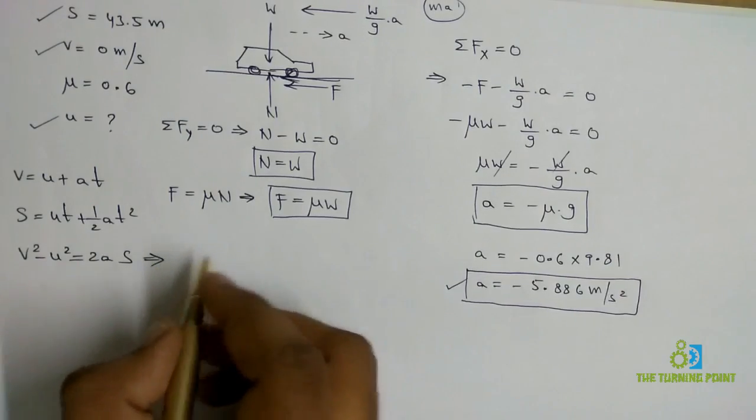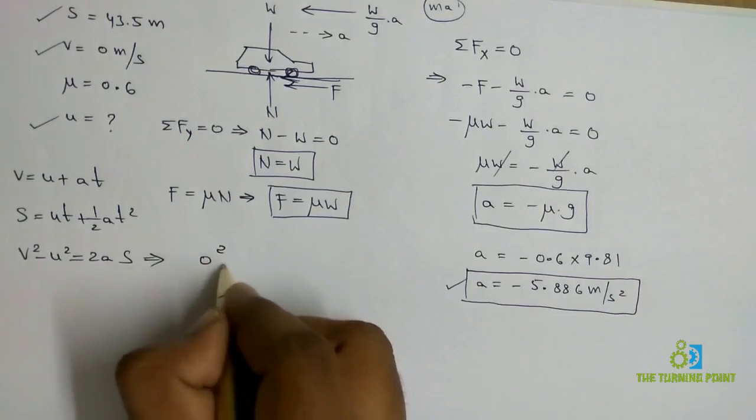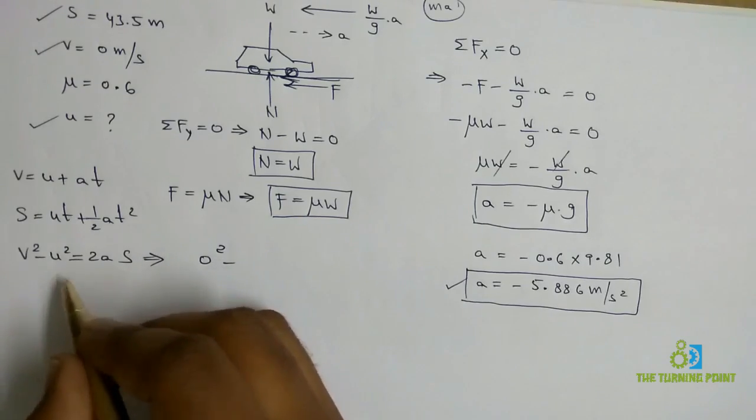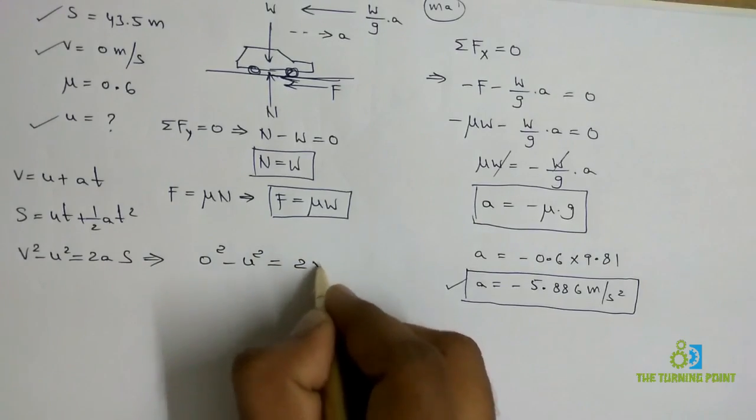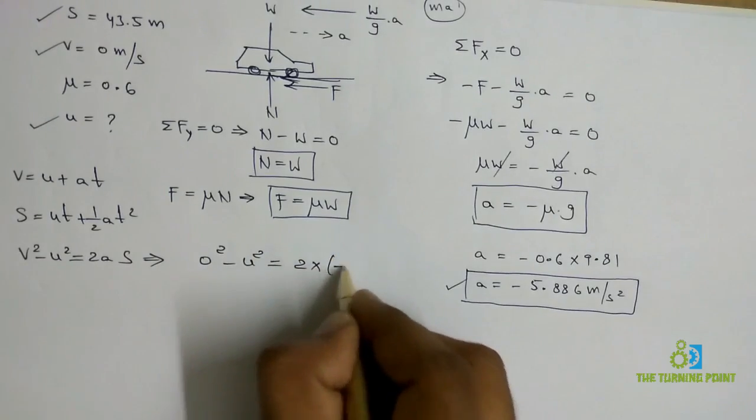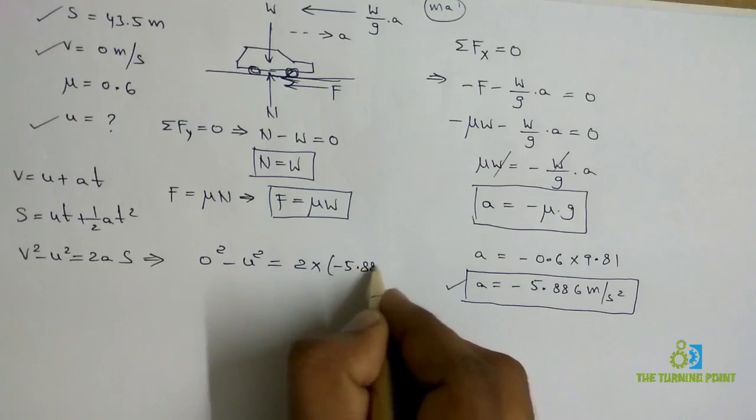From this one, final velocity is 0, so 0² - u² = 2 into acceleration (-5.886) into displacement S (43.5 meters).